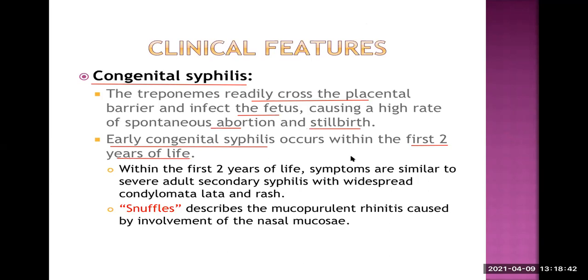If the baby survives, manifestations are divided into two groups. Early congenital syphilis occurs within the first two years of life and is almost like secondary syphilis in adults — widespread mucocutaneous rashes, painless generalized lymphadenopathy, alopecia, condyloma lata. The hallmark of early congenital syphilis is snuffles — a mucopurulent rhinitis caused by involvement of the nasal mucosa, where babies keep having mucopurulent nasal discharge.